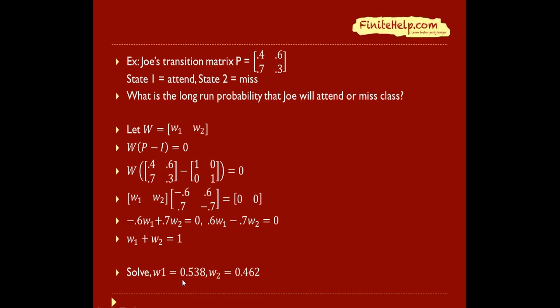So in other words, this is saying that after many, many transitions, it doesn't matter what his initial state is. Eventually, there will be a 0.538 chance that he will attend class and 0.462 chance that he will miss class.